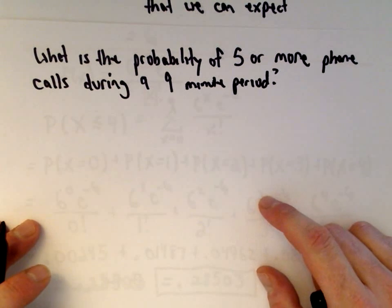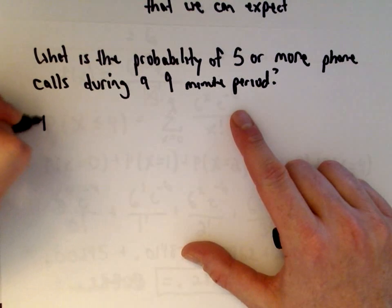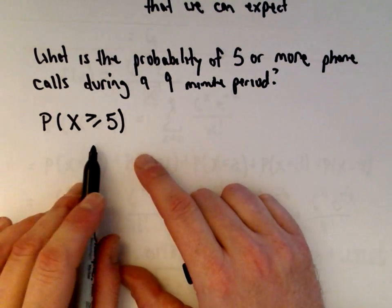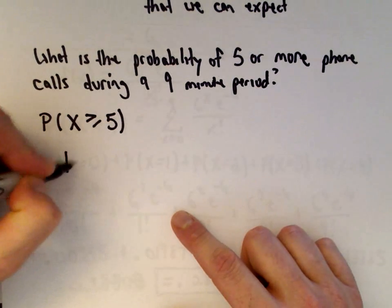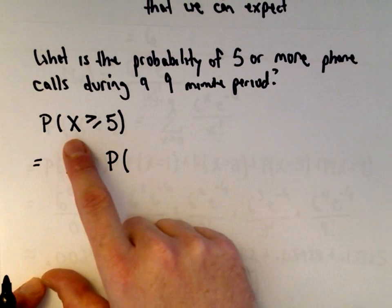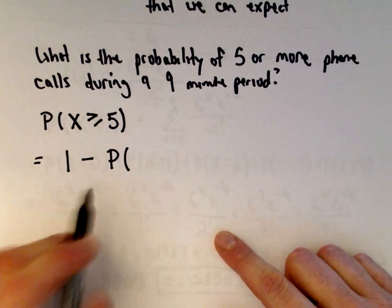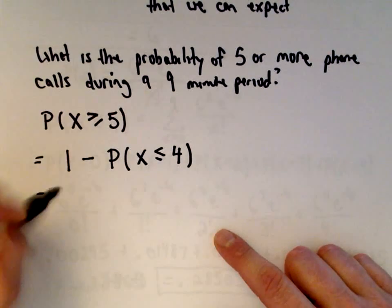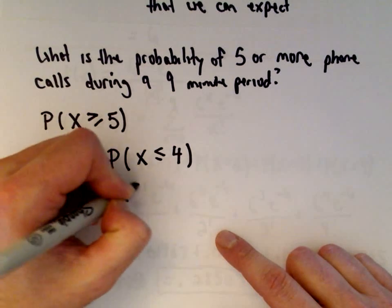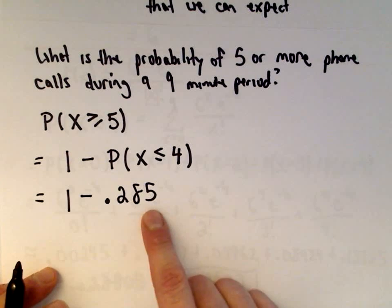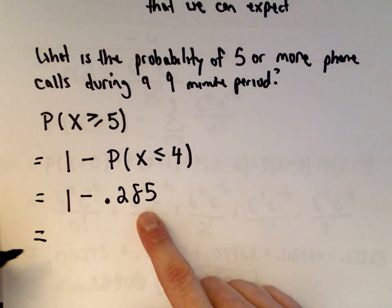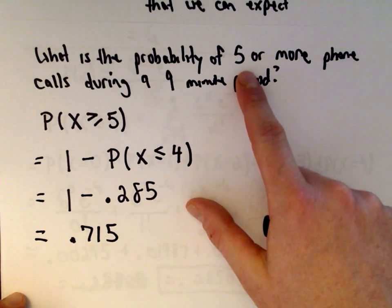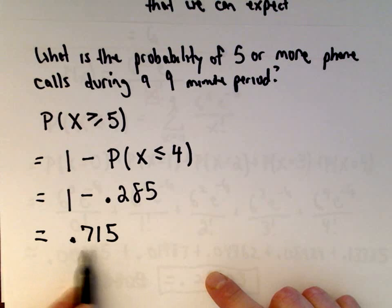To find P(X ≥ 5), we can't read it directly from the table, so we use the complement: P(X ≥ 5) = 1 − P(X ≤ 4). We already computed P(X ≤ 4) = 0.285 from the table. So 1 − 0.285 = 0.715, meaning the probability of five or more phone calls during that nine-minute period is just over 70%.